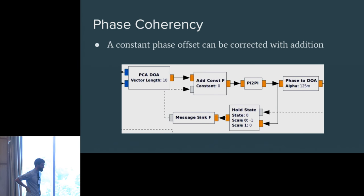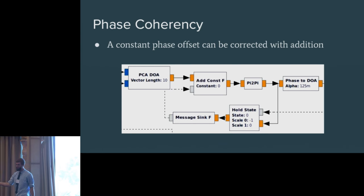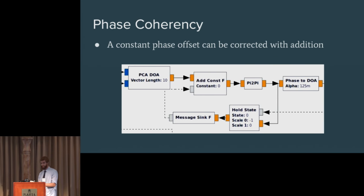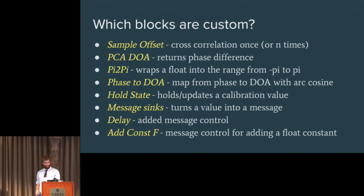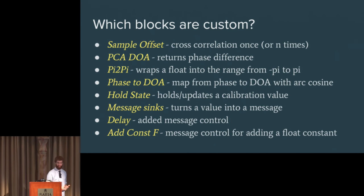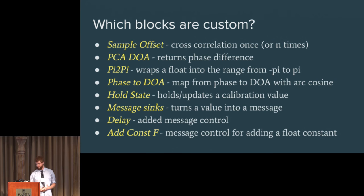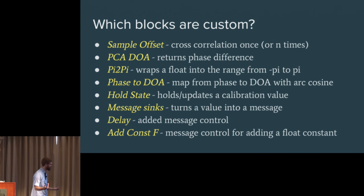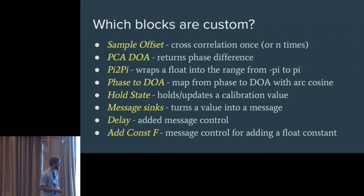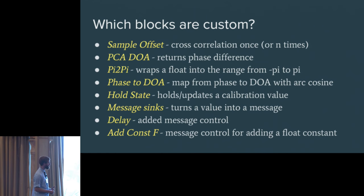If you follow the track down after the pi to pi block, you see a hold state block and a message sync block. This is what turns the calibration mode on and off. We needed two states: it's time to calibrate, or it's time to take a measurement. Because at a certain point, we're going to be expecting a phase difference. We wanted this to use a phase difference to measure DOA. The hold state block is a custom block that we made to say either start the calibration, zero out our phase difference, or let it take measurements. This slide explains what the custom blocks do. The sample offset block does cross-correlation once, or n times. The PCA DOA block does the phase difference. A couple of the blocks we made, the delay and the add constant float blocks, are pretty much the same as the GNU radio blocks that already do those things, but we just needed to be able to control them with messages.